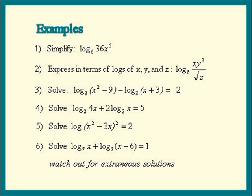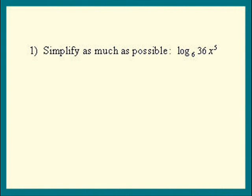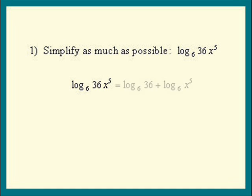In example 1, we are asked to simplify log base 6 of 36 times x to the fifth power. Do you see the product rule come into play? Log of 36 times x to the fifth becomes a sum of the logs: log of 36 plus log of x to the fifth.